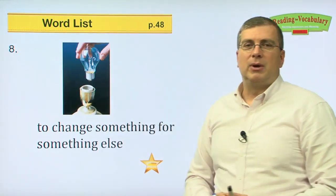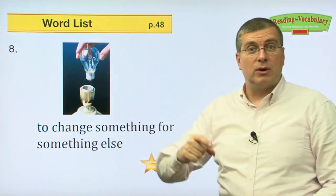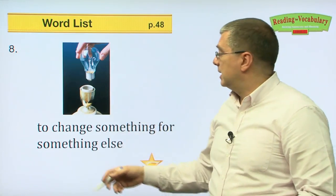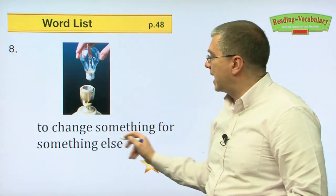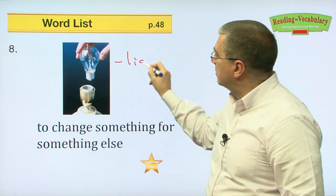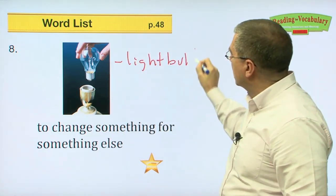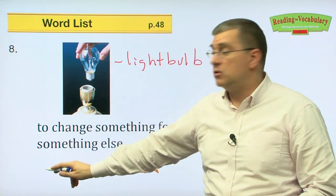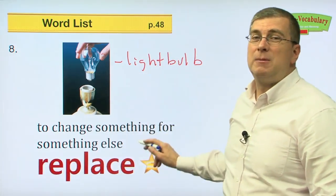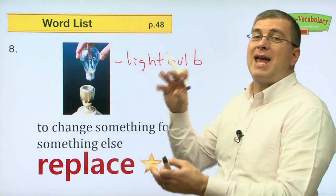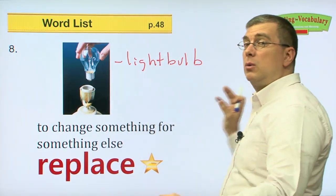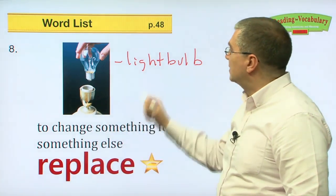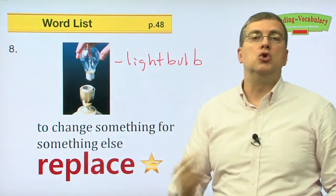Number eight. Maybe your mom or dad does this a lot. If the light goes out in your room, you flip the switch and it doesn't work — it's time to change something for something else. You take the old light bulb and put a new light bulb in its place. What are you doing? You are replacing. Replace the old one with a new one — get rid of the old one and put a new one in. Replace the old light bulb with a new light bulb.